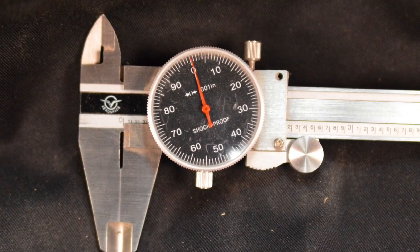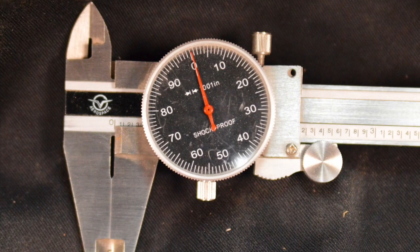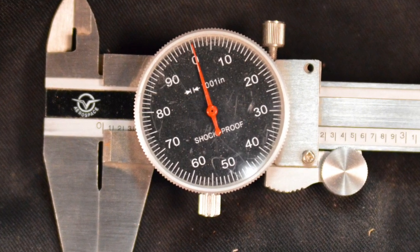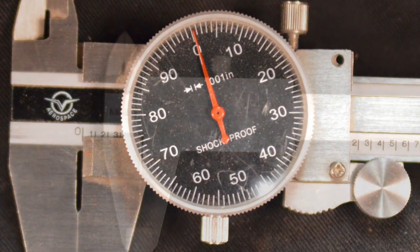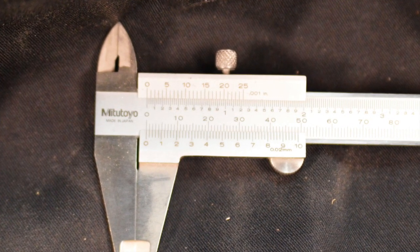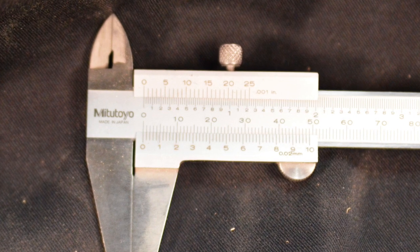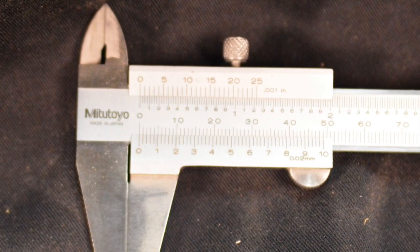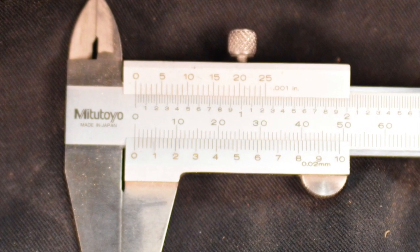Dial calipers are handy because they don't require batteries, but in a dusty environment, chips can cause the gears to skip. Vernier calipers are the most accurate, but they are difficult to read and don't allow the user to move back and forth from inches to millimeters.